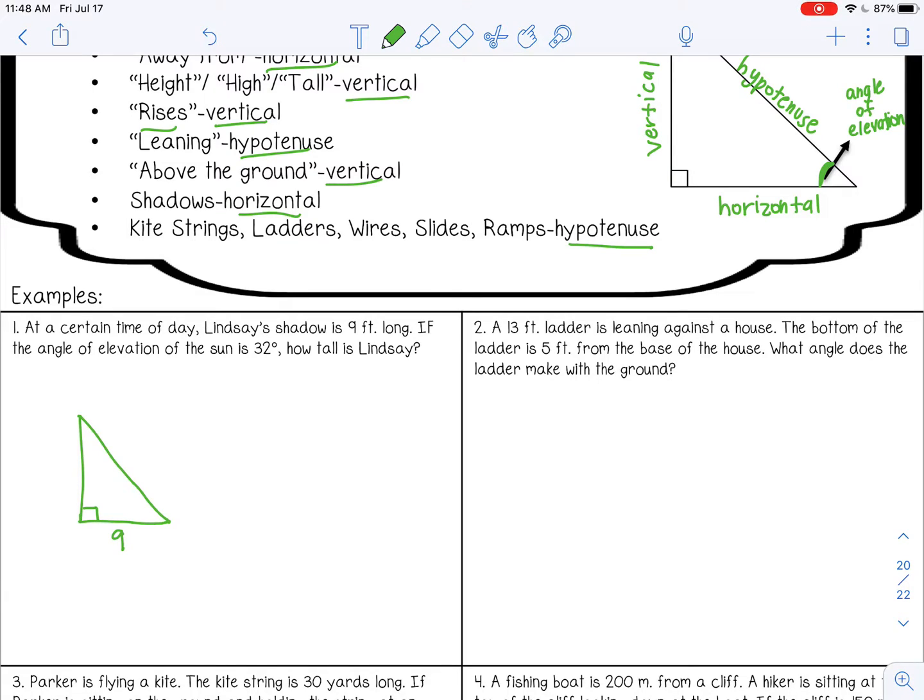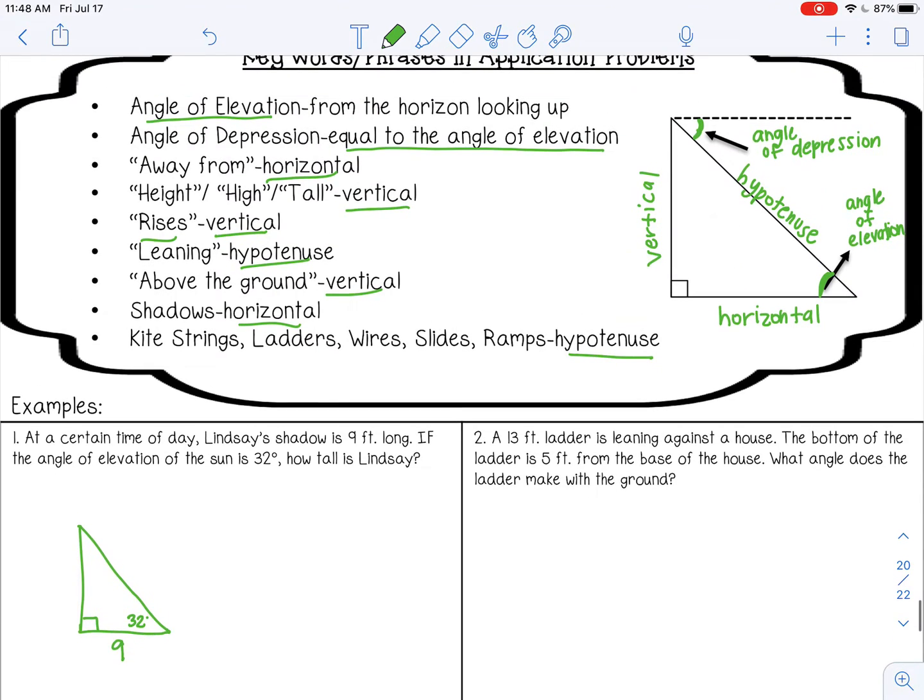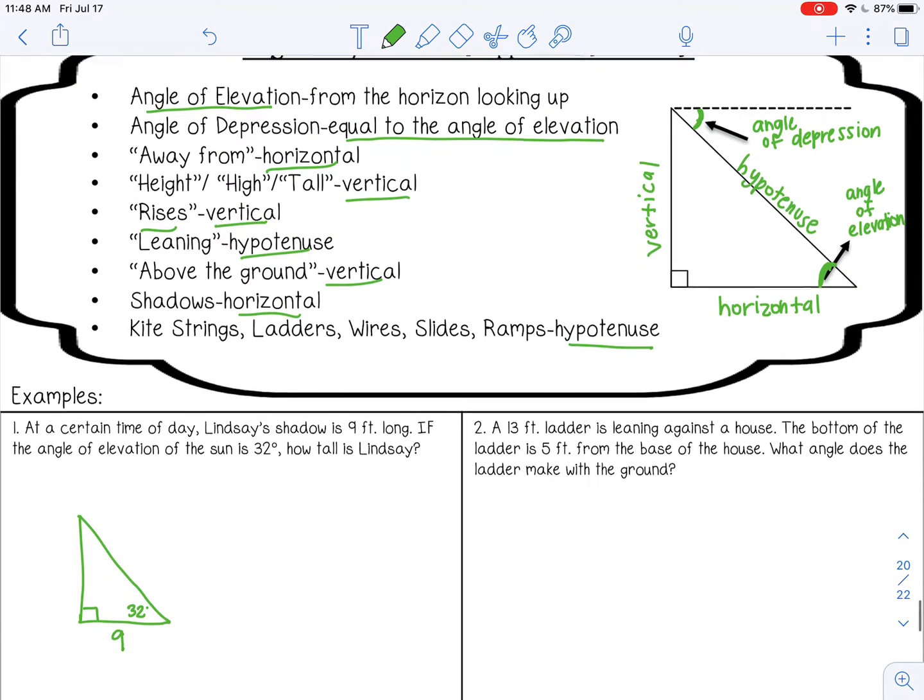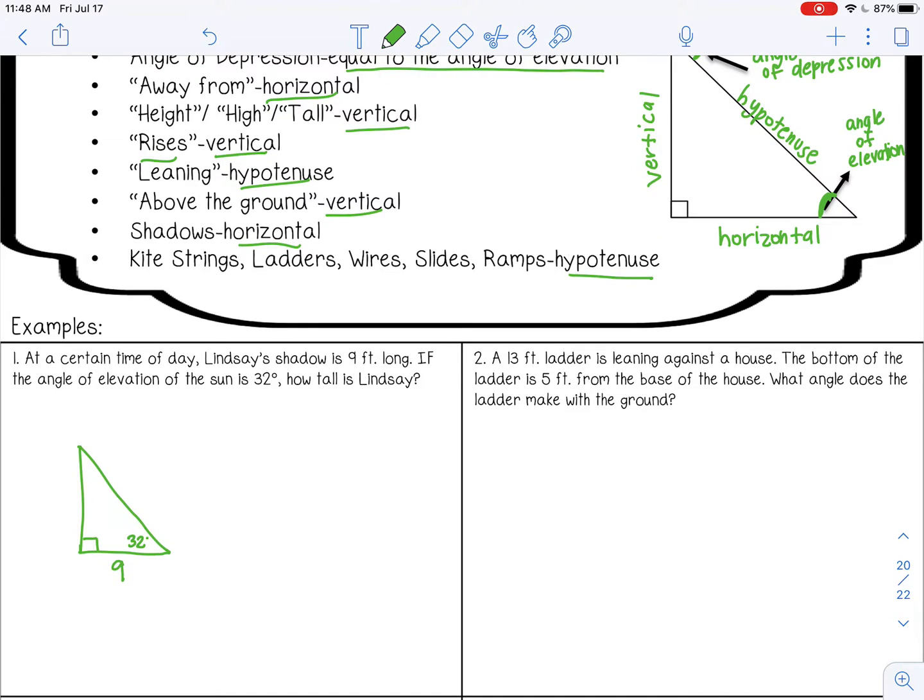So the angle of elevation is always here. And if you look back at your picture, you see it right here. And then if we want to know how tall Lindsay is, tall is going to be the vertical. So basically, we have Lindsay here. We have her shadow on the ground. We're trying to find how tall she is. If you want to actually draw it out, you can totally do that. So once you have it drawn, then you just need to label your sides and solve it like a normal right triangle.